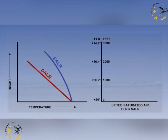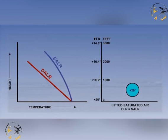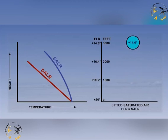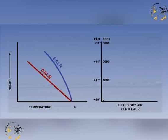There are two final scenarios we must look at which are linked. When the air is saturated and the ELR happens to fall on the SALR, then the atmosphere is said to have neutral stability. Similarly, if the air is unsaturated and the ELR happens to lie along the DALR, then the atmosphere is again said to have neutral stability.